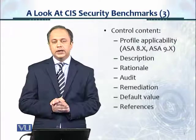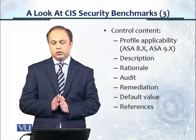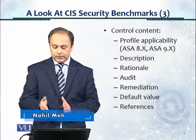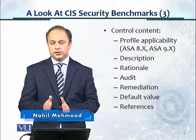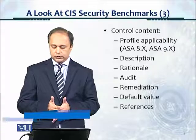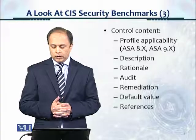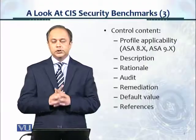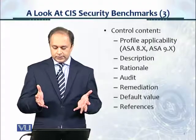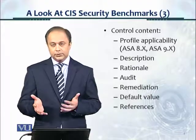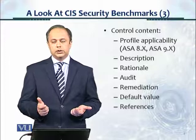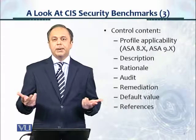In the CIS documents or benchmarks, like this one for the firewall, there are different sections. There's a profile applicability section — for this firewall it was for ASA Cisco Firewall 8.x and 9.x. There's a description section, a rationale section, an audit section, remediation, default value, and references. And sometimes there's an impact section also.